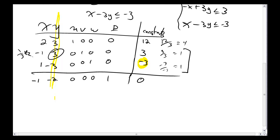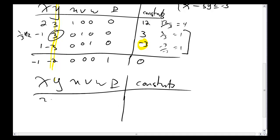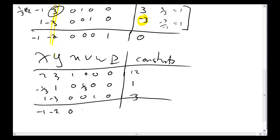Notice what happens. I get 12 over 3. I get 3 over 3. I get negative 3 over negative 3. This is 4, 1, or 1. Pivot row is going to correspond to the smallest ratio. Notice I've got two options for what smallest ratio means. So I can pick my favorite. I'll go with this one. So I'm going to do 1 third times row 2. That's going to give me x, y, u, v, w, capital P, constants. So I'm going to do 1, 2, 3, 1, 0, 0, 0, 12. Negative 1 third, 1, 0, 1 third, 0, 0, 1. And then 1, negative 3, 0, 0, 0, 1, 0, negative 3. And finally my objective line being negative 1, negative 2, 0, 0, 0, 1, 0.